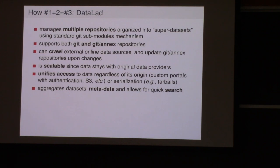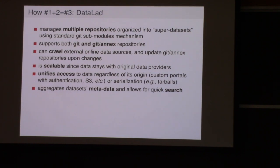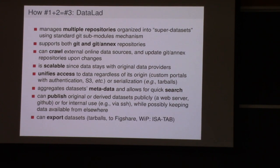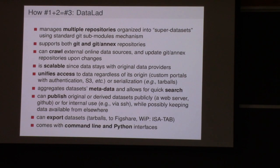Git-Annex keeps track of where data is available from, so whoever clones the repository will be able to obtain data files from wherever they are — whether from original OpenFMRI or your university website with derived data. DataLad manages multiple repositories organized into super datasets, supports both git and git-annex repositories, can crawl external websites, and is scalable since data stays with original data providers. We unify access regardless of origin, aggregate metadata, and it comes with command-line and Python interfaces.